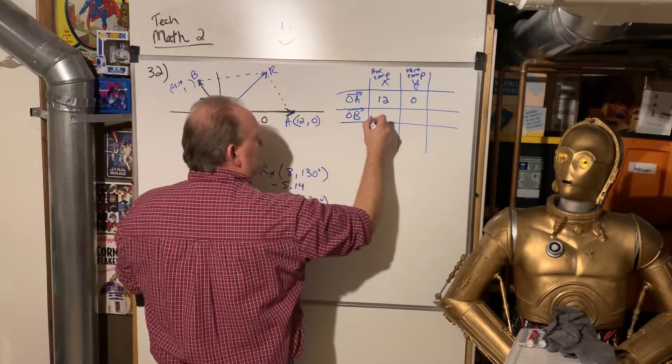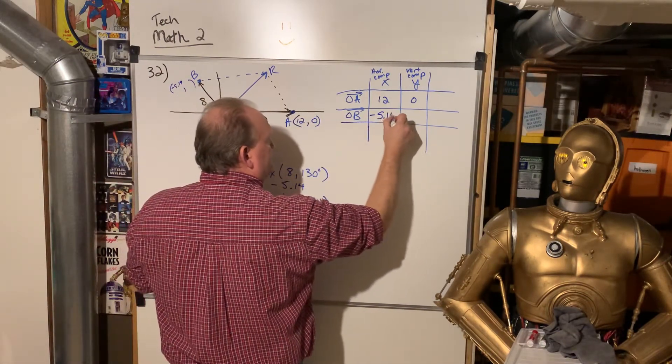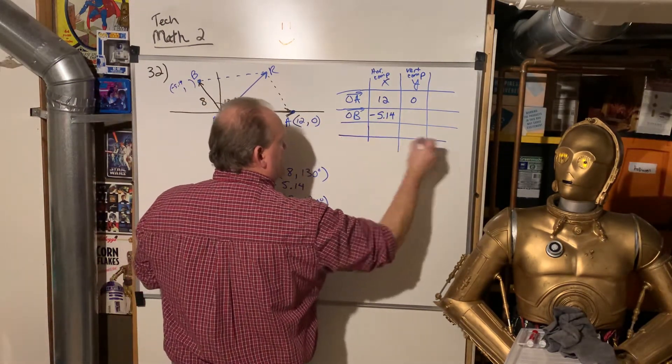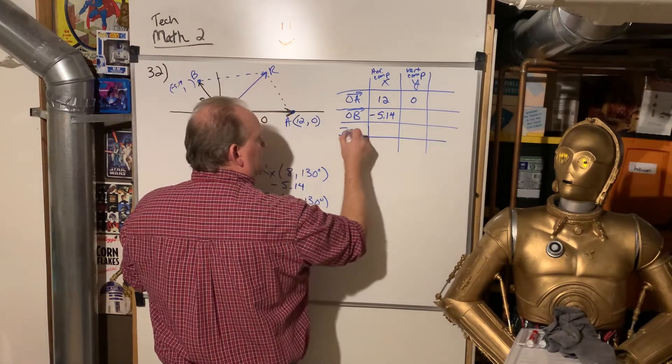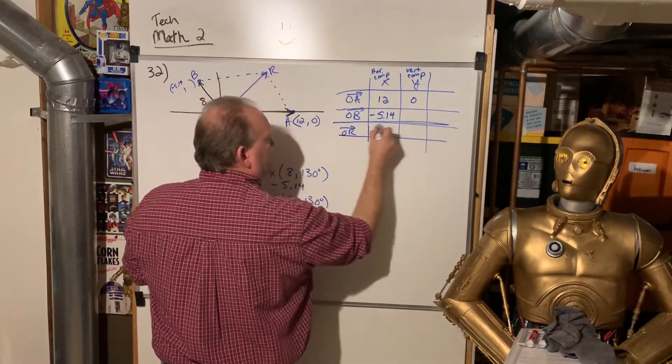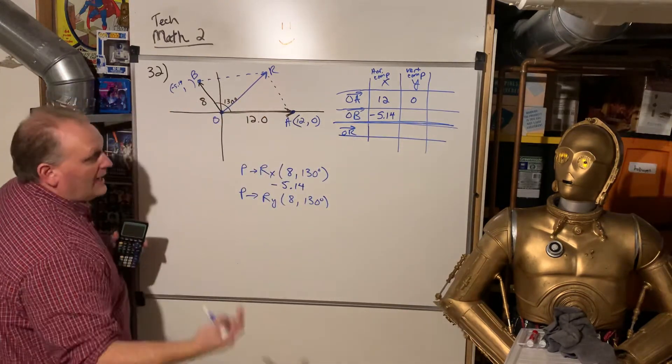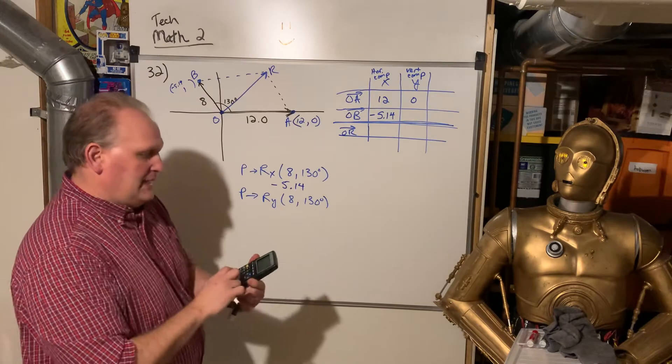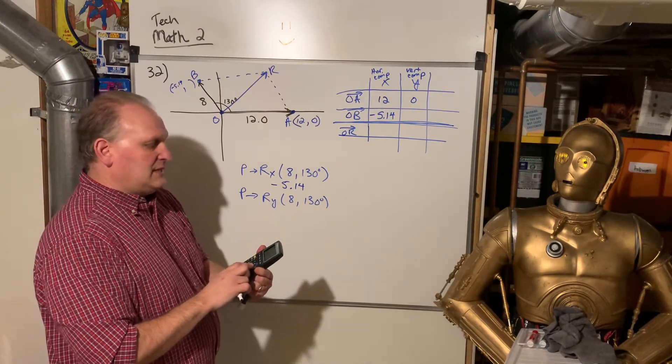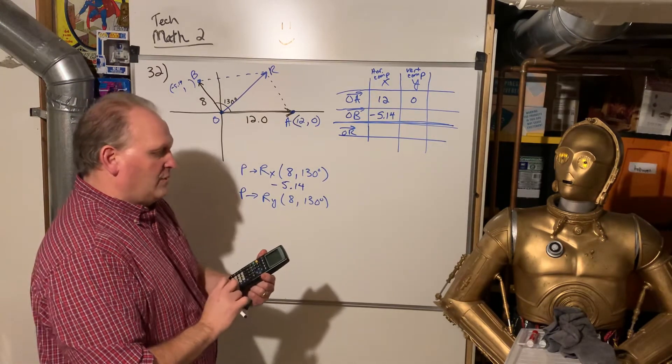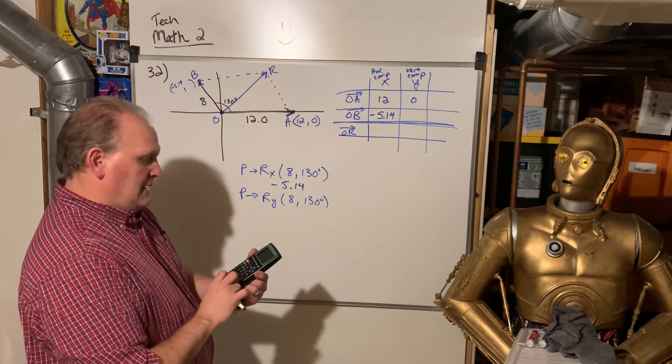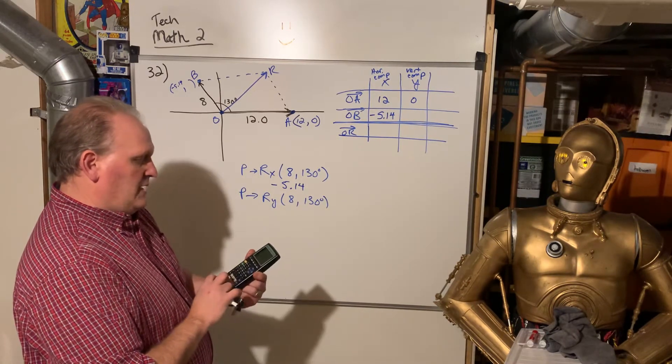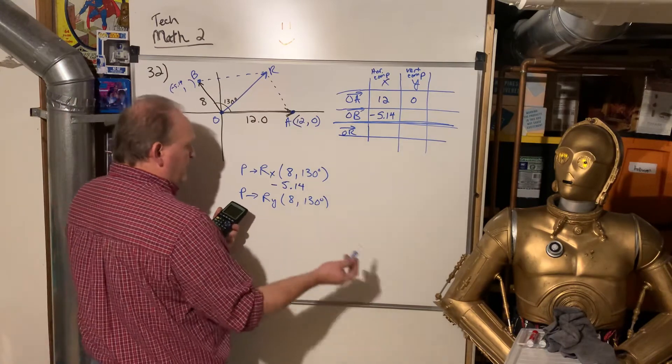Okay, so let's recall on the calculator here. And I'll just show you one of them. So we're going to go second angle. We're going to go down until you see polar to P to R x. Hit enter. And now we put in 8, 130 and then hit enter. Here you should get negative 5.14. Now that makes sense because, look, the x should be negative. It's in the second quadrant. So I'll put it here, negative 5.14. But I'm also going to write it here. And so this is going to be the resultant vector down here.